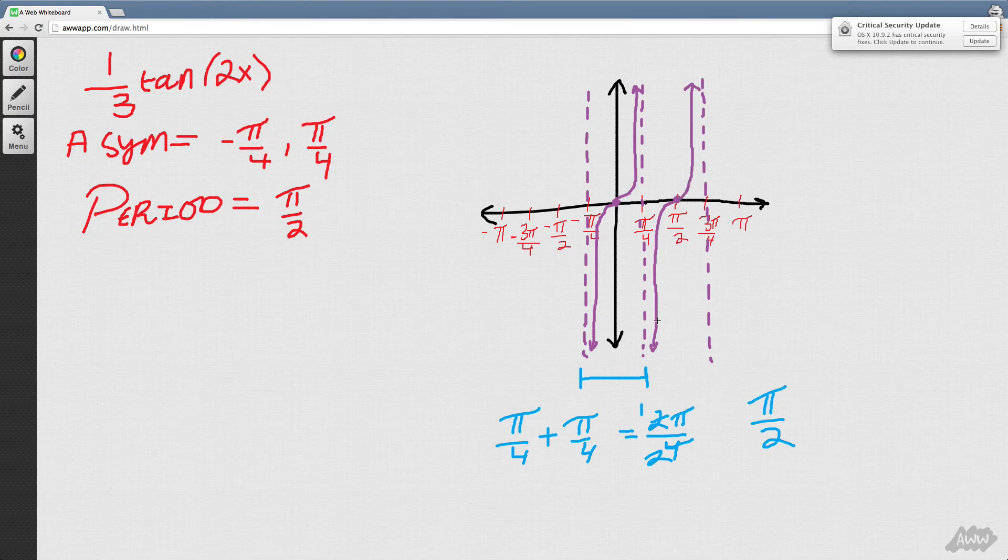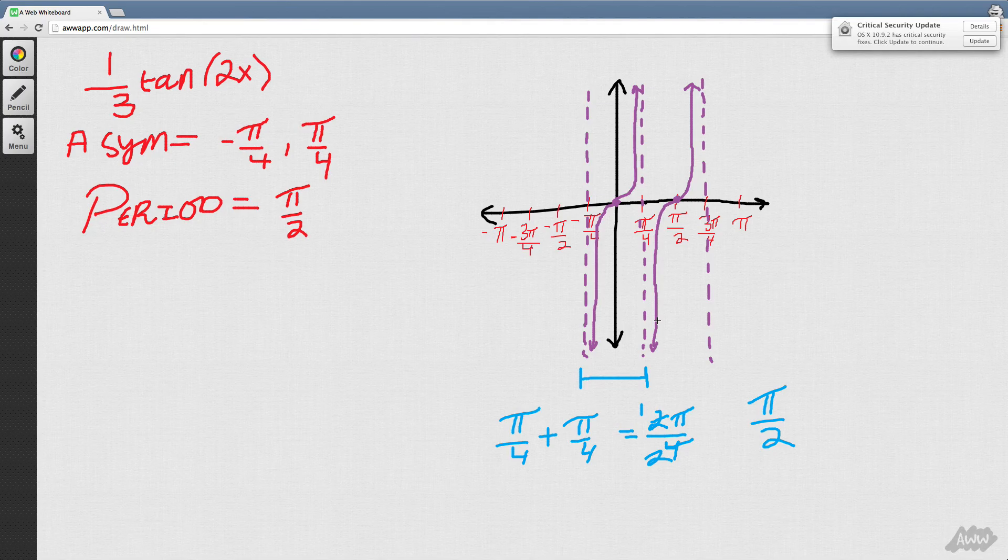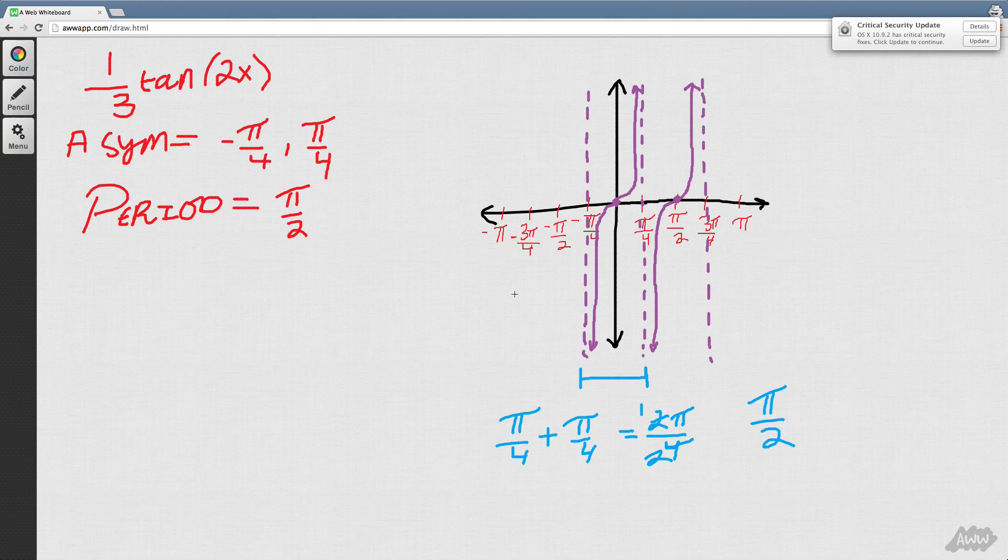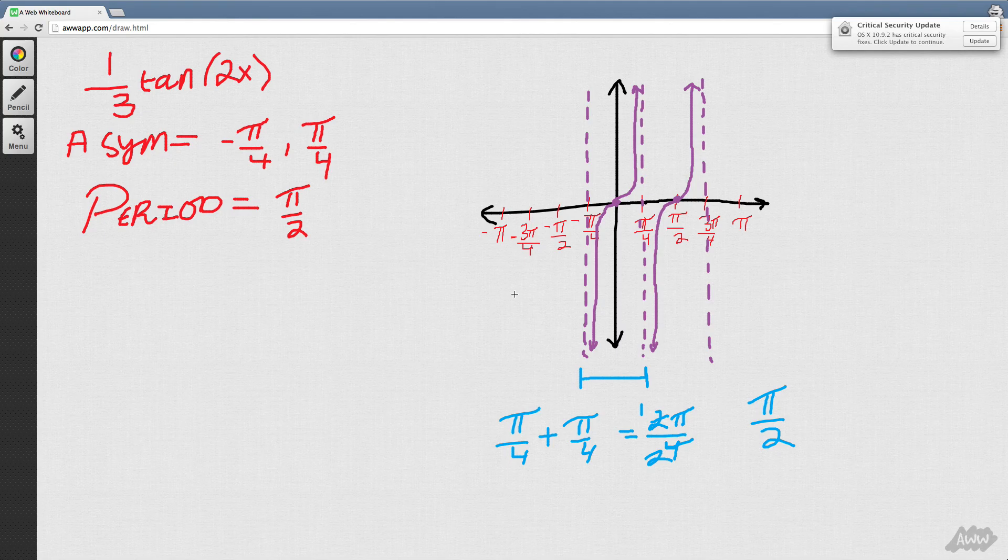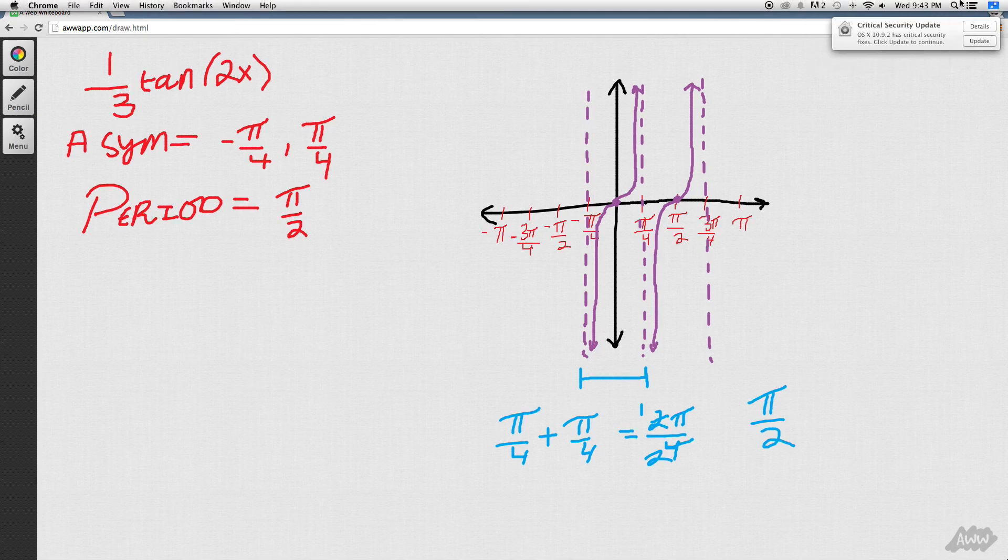And remember, tangent always falls to the left, rises to the right. And basically, that's our problem. Hopefully it helped, and we're going to try example 2 in the next video.